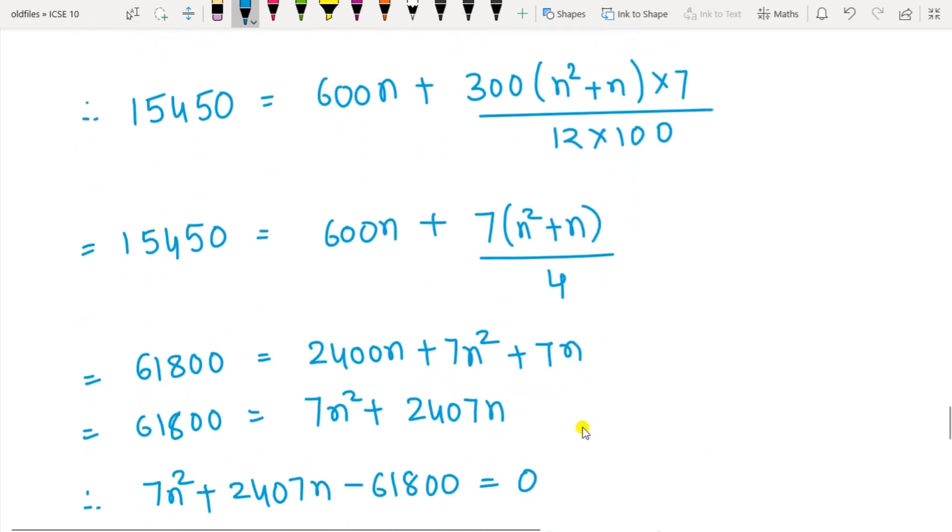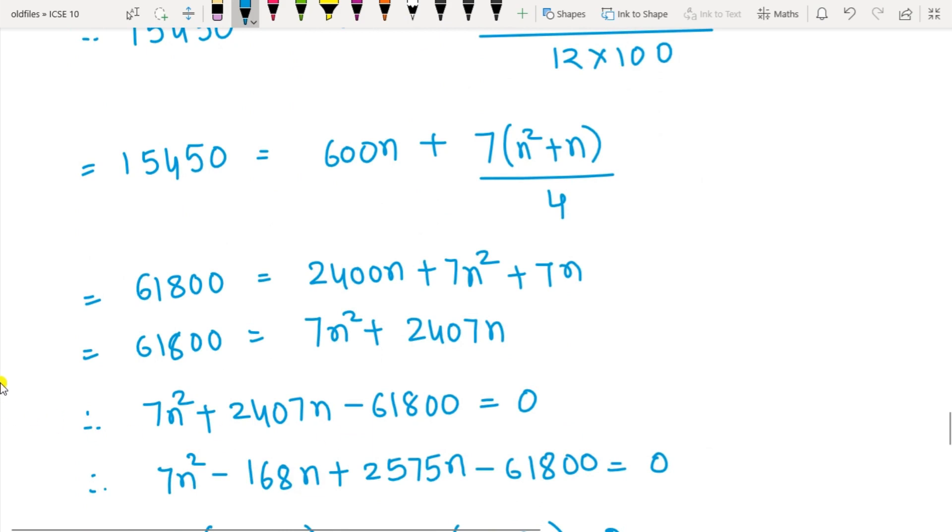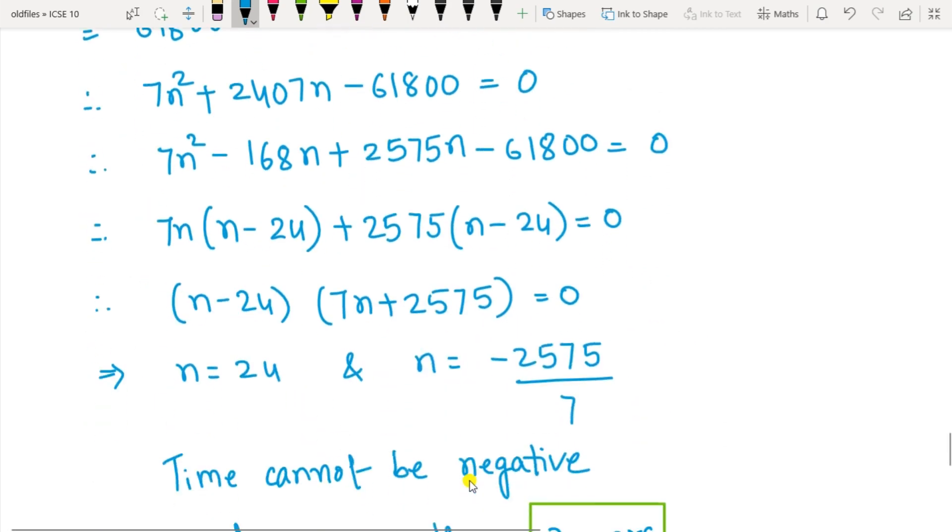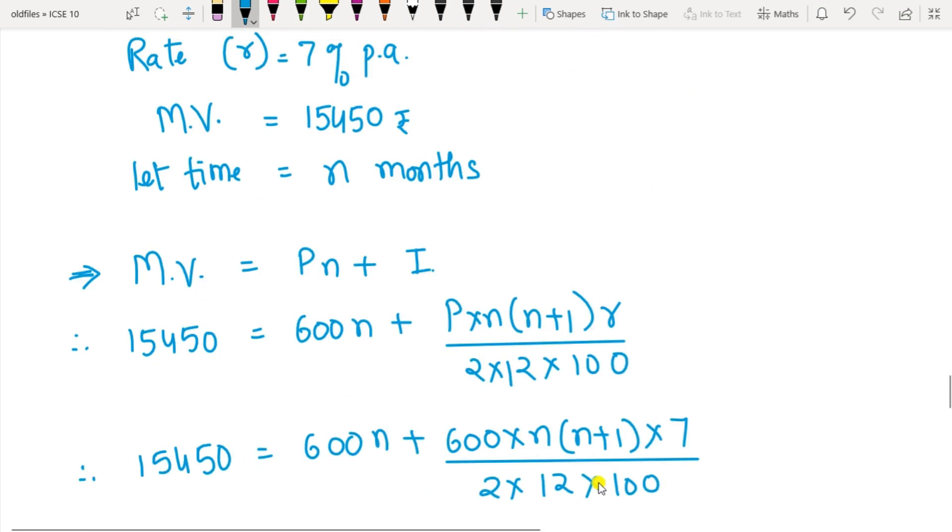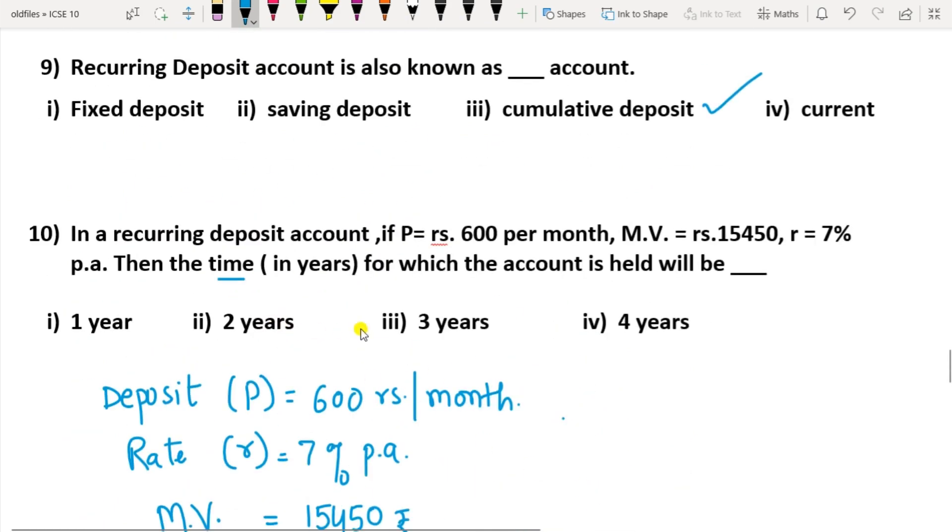This becomes your quadratic equation: 7n² + 2407n - 61800 = 0. Now solve this quadratic equation and you get the value of n as n = 24 and n = -2575/7. But time we are finding - n means time - so time cannot be negative. You have to eliminate this and consider n = 24. So period equals 24 months, convert the months into years, that is 2 years. As it is given in years in the option, option 2 here, 2 years, is the correct option.